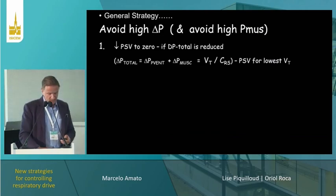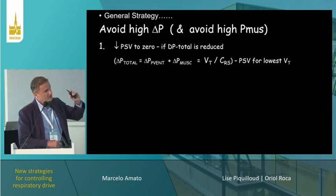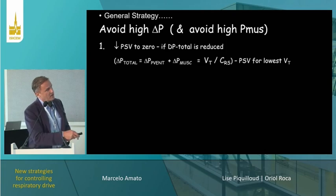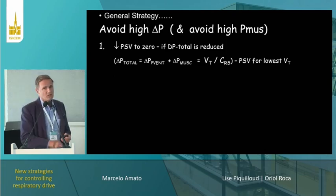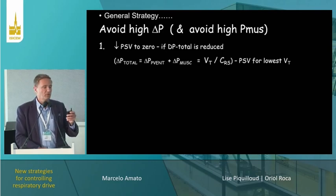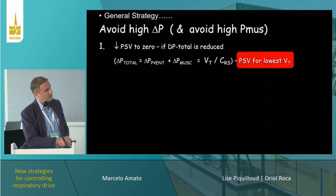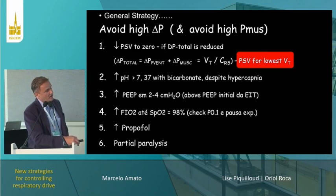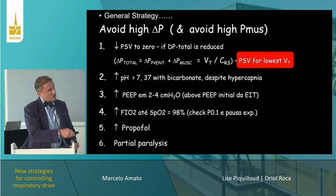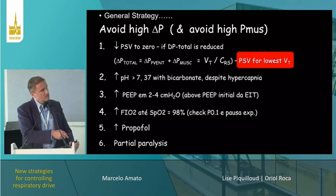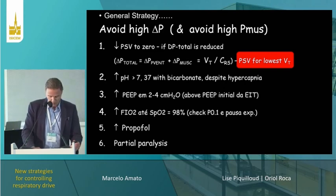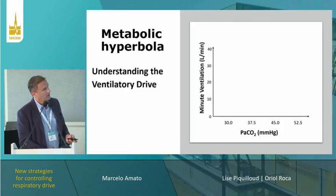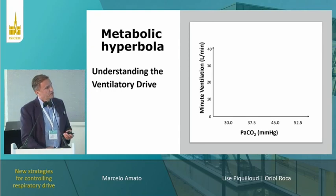We use a stepwise protocol. The first step is trying to minimize pressure support, but this does not mean going to CPAP in all patients — some do better with seven of pressure support as their lowest possible tidal volume. The second step is pH. We are going to talk about FiO2 and about pH, because this is a little bit controversial. When I started saying I use bicarbonate to modulate the ventilatory drive, some people were skeptical, believing bicarbonate wouldn't help. But I believe it does, and we now have some proof.